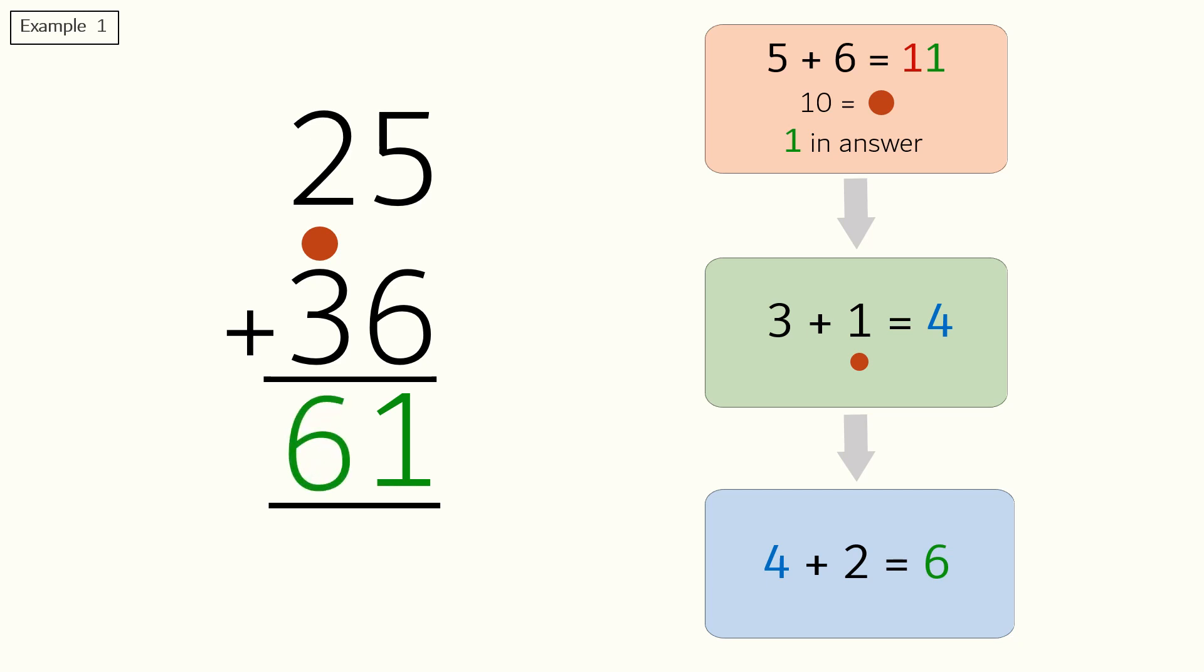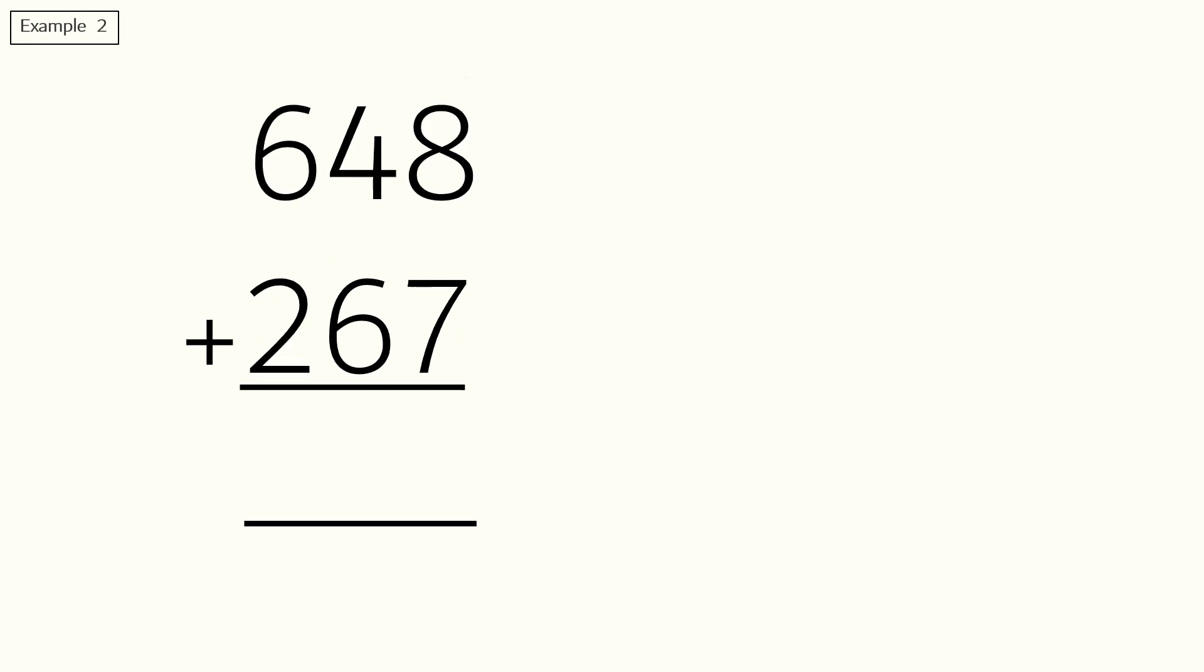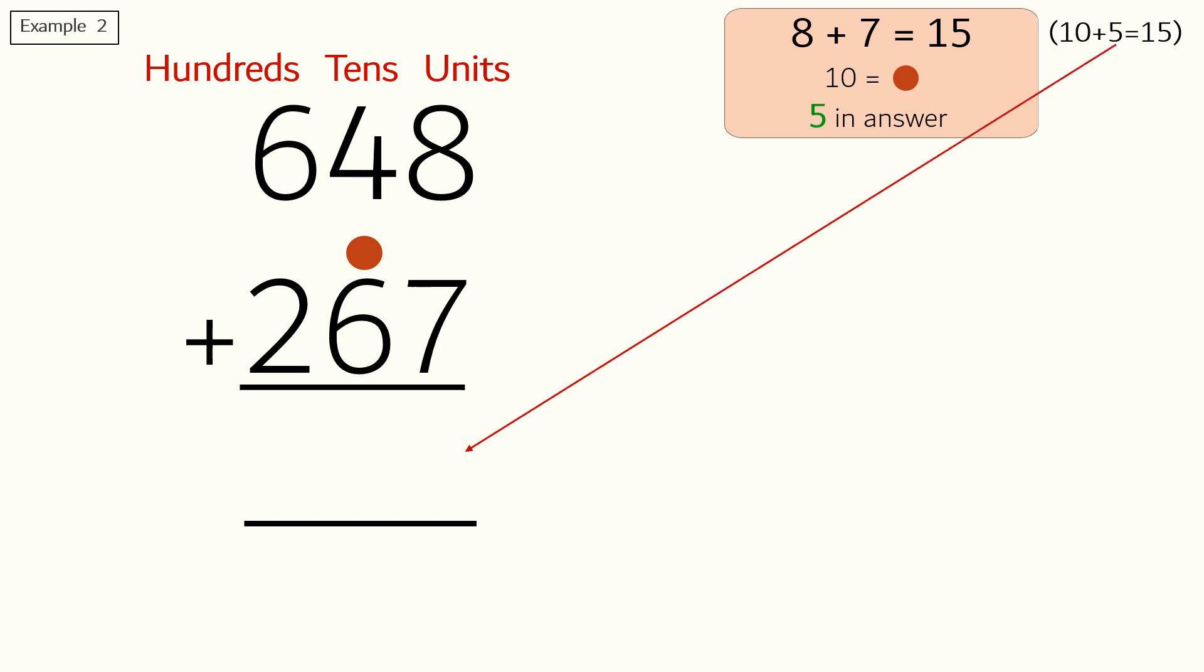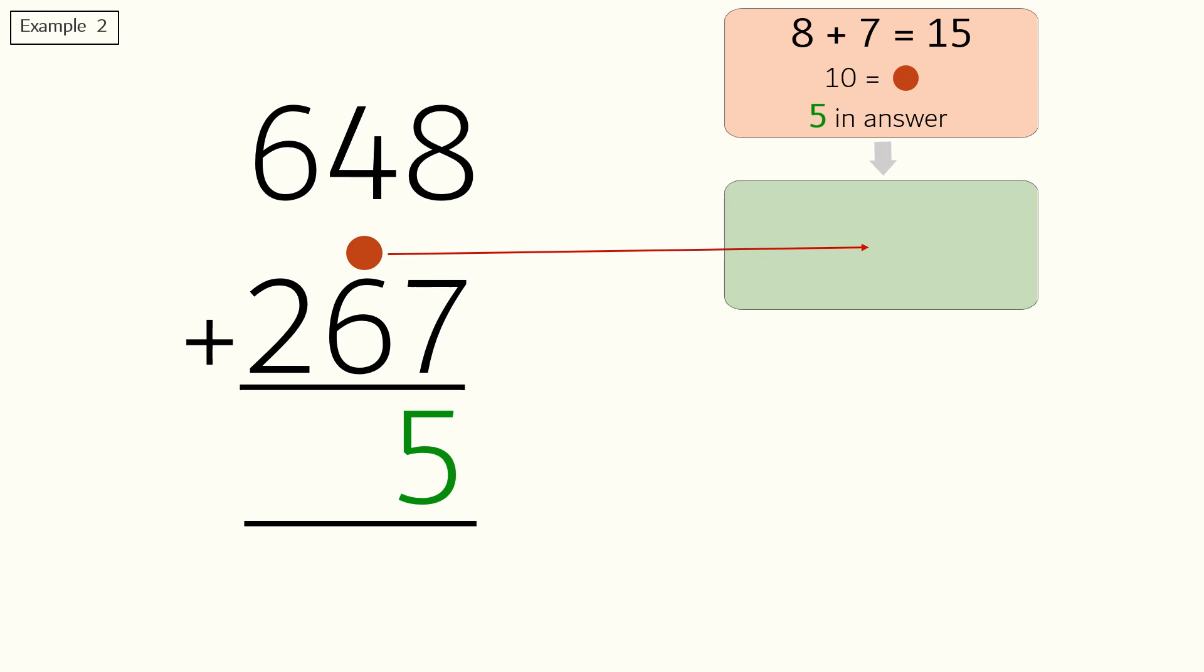In this example we have units, tens, and hundreds. We will start adding from the unit side. Eight plus seven is equal to fifteen. Now fifteen is ten plus five, so for the ten we will put a dot above the digit in the next column, in this case it is six, and write the remainder five from fifteen in the answer section. Next we will add the dot or one that is above six, so six plus one is equal to seven.